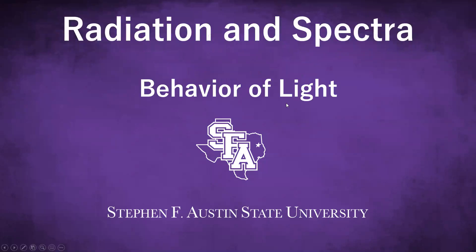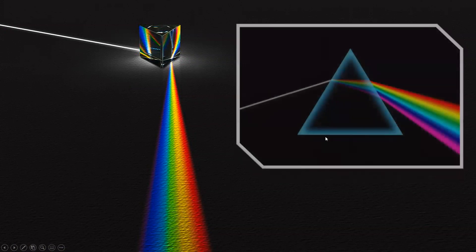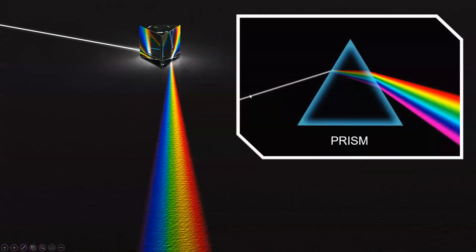Welcome back to astronomy. Let's talk about the properties of light. We like to think of light as a cosmic messenger carrying information from celestial objects, and if we take an object like a prism, we can take that light and break it up into its color components,